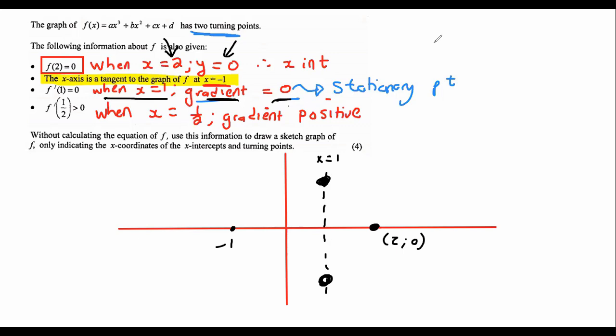So there is one extra thing they've told us. They said that when x is 1/2, so x is 1/2 is somewhere along this line. When x is 1/2, the gradient is positive.